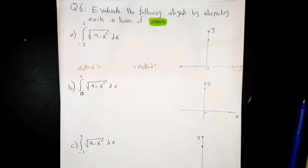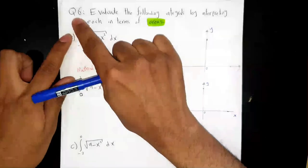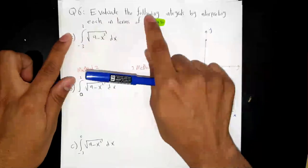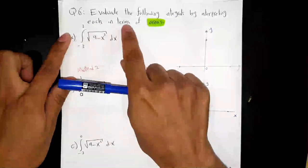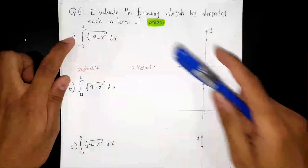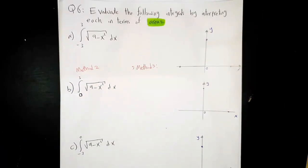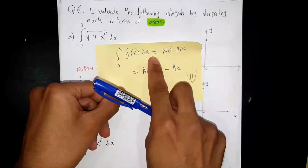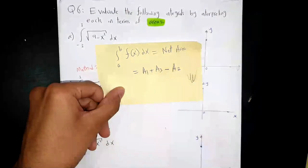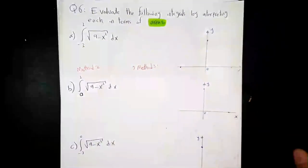As-salamu alaykum. Today we will continue the second part of section 5.2. We are on question number 6. He said: evaluate the following integrals by interpreting each in terms of areas. That means you need to graph the function in order to find the integral. Recall: the integral from a to b of f(x) dx generally represents the net area. Do not forget this because it is very important.